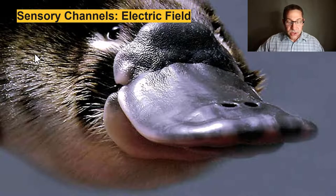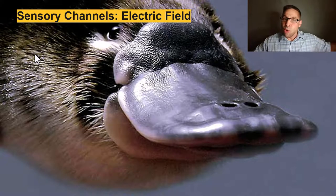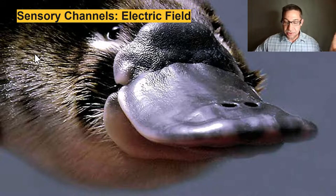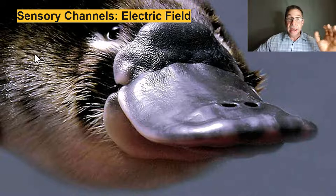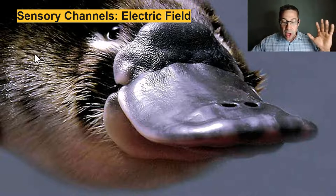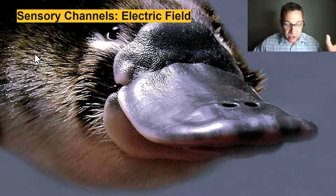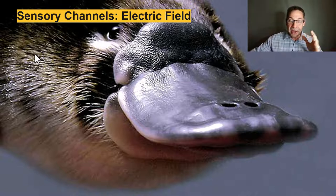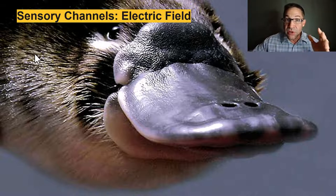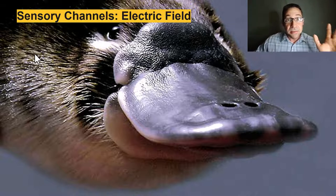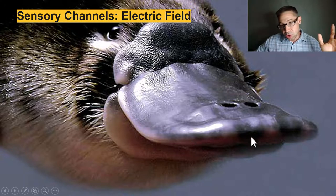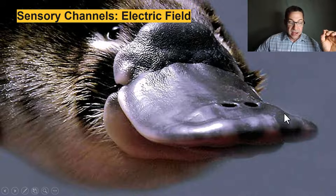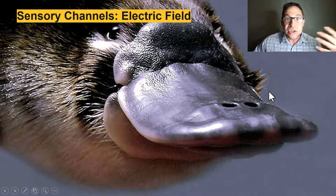As discussed in the last module, duck-billed platypuses recognize electrical potentials in a highly directional manner, unlike electric fish that can only migrate linearly to the electric source. This ability is attributed to the large number and variety of electroreceptors found on their bills.